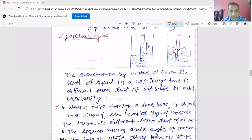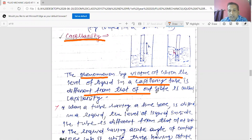Capillarity. The phenomenon by virtue of which the level of liquid in a capillary tube is different from that of outside. It's called capillarity.